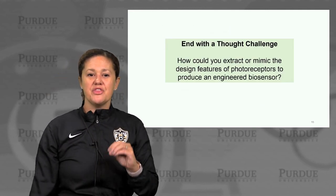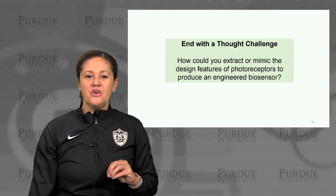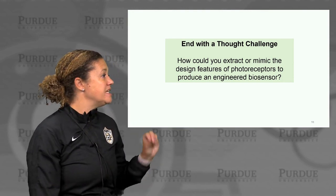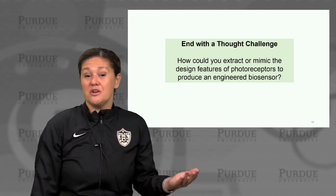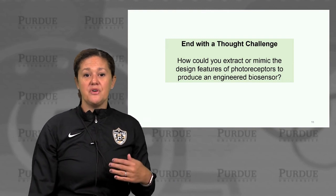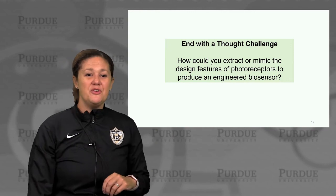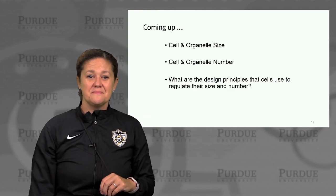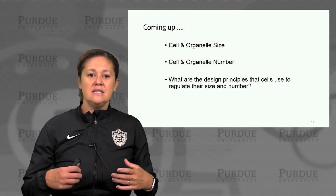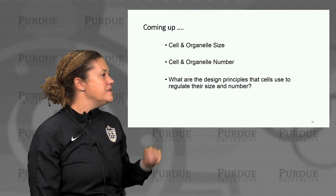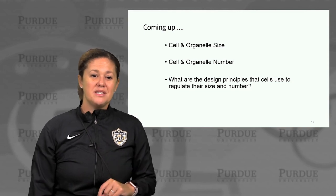I'll end with a thought challenge: how could you extract or mimic the design features of photoreceptors to produce an engineered biosensor to detect, say, toxins or contaminants in a water stream, or levels of drugs circulating through a patient's blood? Think about this and see if you can come up with some novel solutions. Coming up, we're going to move into cell and organelle size and number — specifically, what are the design principles that cells use to regulate their size and number. I hope to see you next time. Thanks.